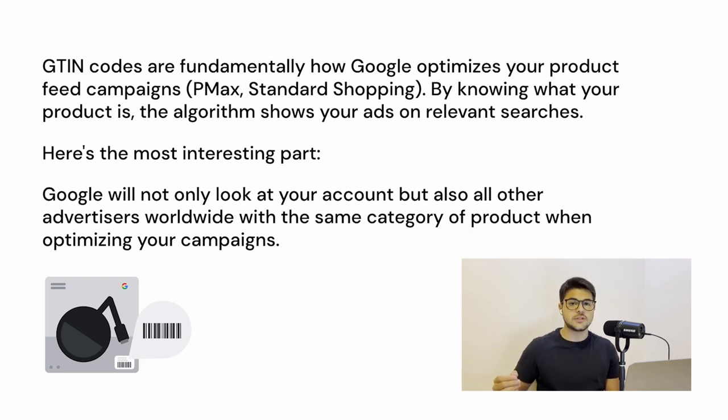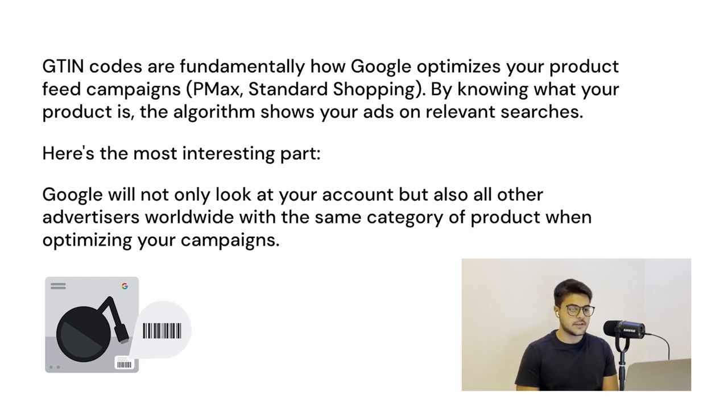Here's the most interesting part: Google not only looks at your account when optimizing your ads, but also at all other advertisers worldwide with the same category or type of product. So let that sit for a second — because now you have campaigns optimizing not just out of your own ad spend. Let's say you spend $5,000 a month on campaigns. Now you have Google optimizing your campaigns based on millions of dollars being spent on products with the same category, same characteristics, same color, same type. That means you start off with a lot of advantage because Google already knows who to show the ads to.